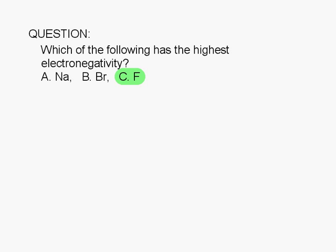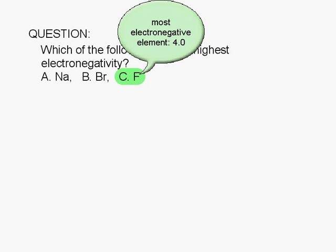In fact, fluorine is the most electronegative element. And it is assigned a value of 4.0 in Linus Pauling's electronegativity scale.